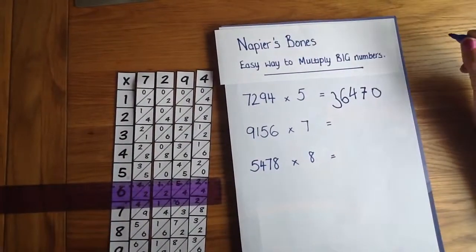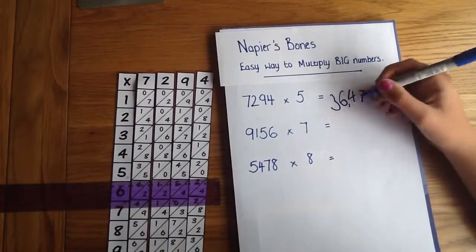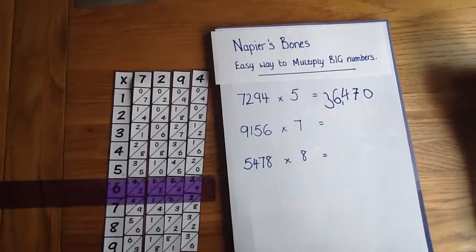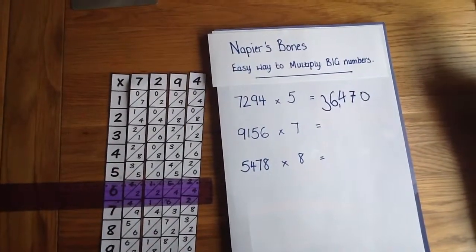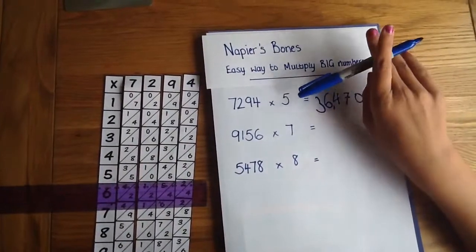So and if we put a comma next to the 6 we have 36,470. So that's your answer to 7,294 times 5.